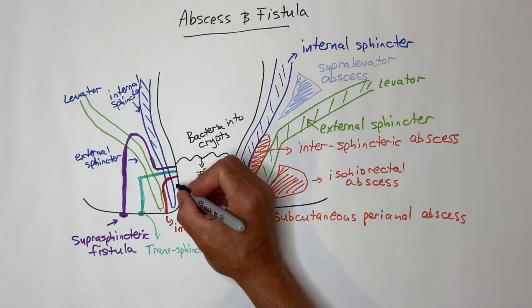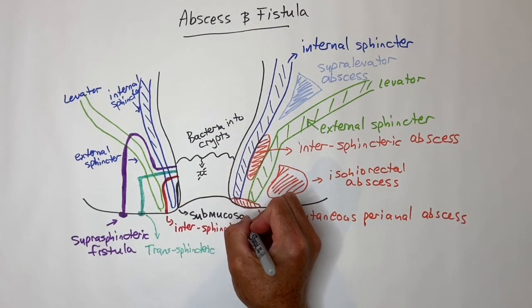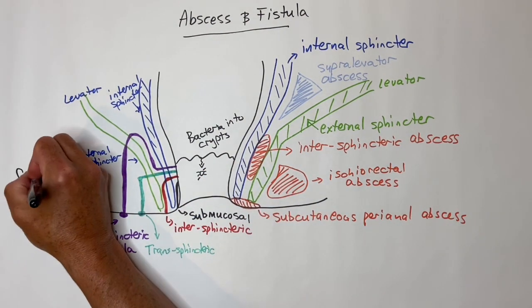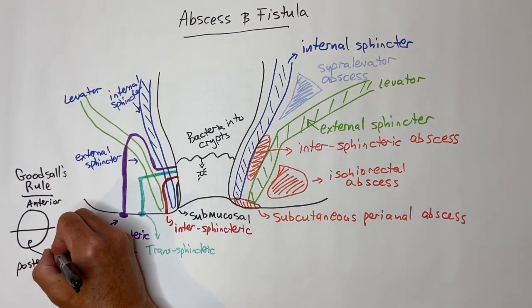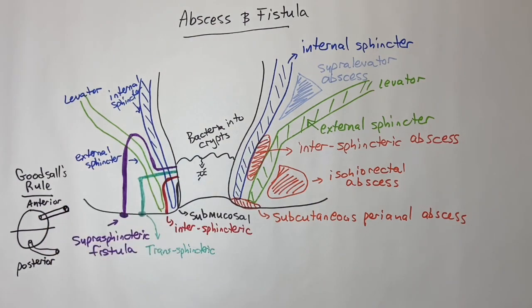The internal opening of the fistula can be found using Goodsall's rule. Anterior ones take a straight line to the internal opening. Posterior to the midline take a curved path, ending up with the posterior midline internal opening. Goodsall's rule does not work if the external opening is more than 2 centimeters from the anal verge.